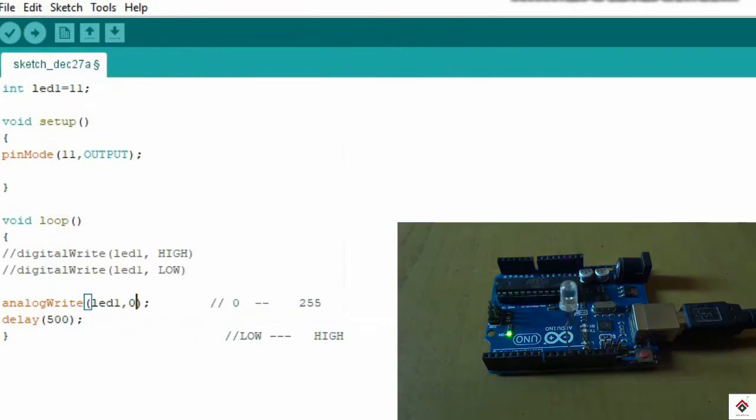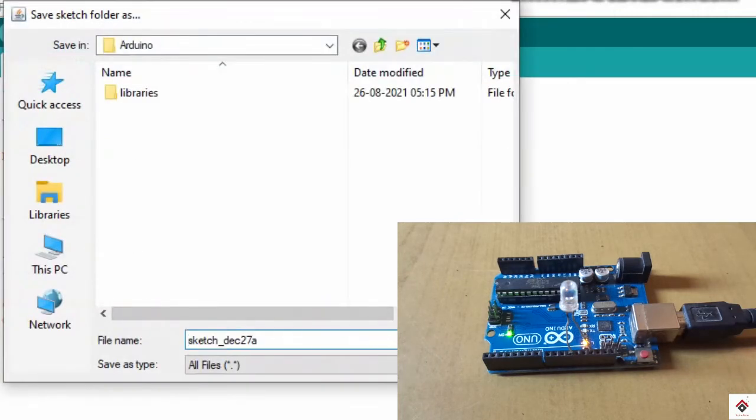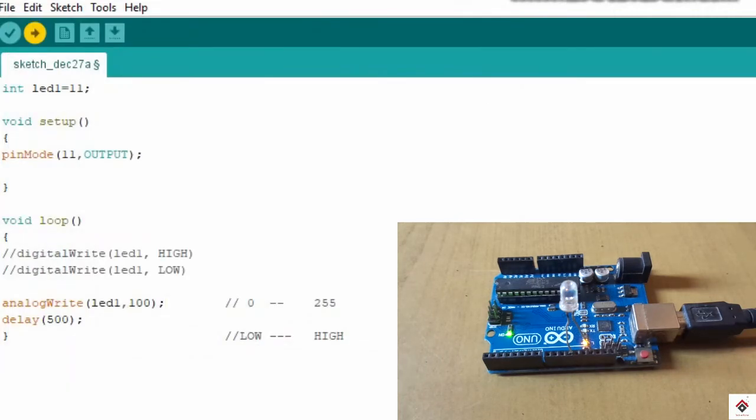So I'll give some random value. We'll give it as 100. So it will not be at its full brightness. Now the brightness will be somewhat reduced. As you can see the brightness is lower compared to before.